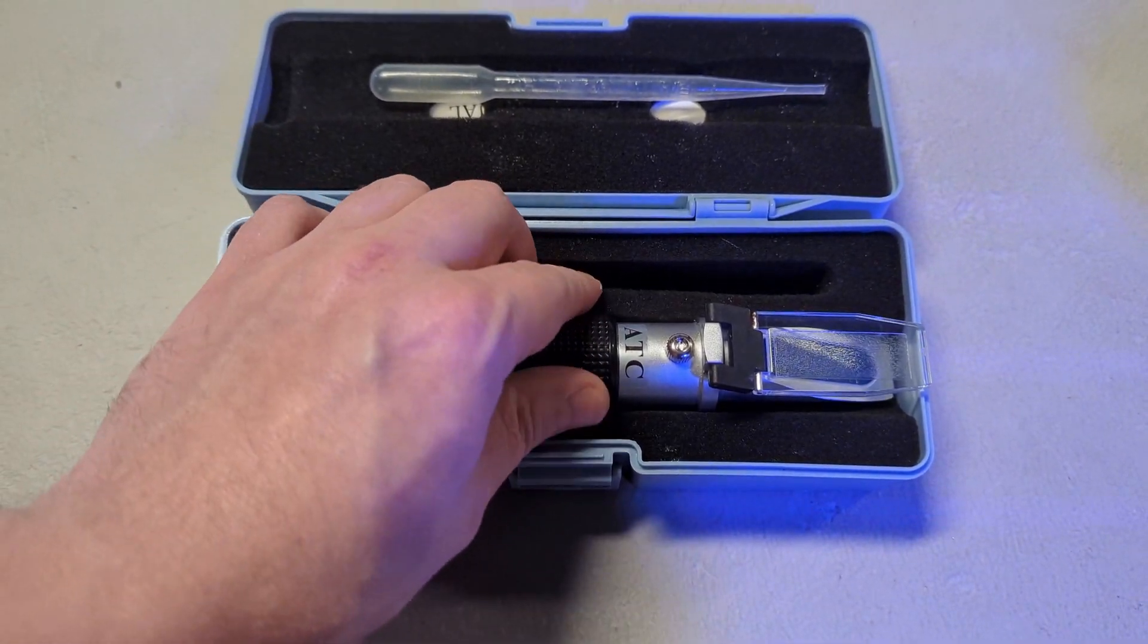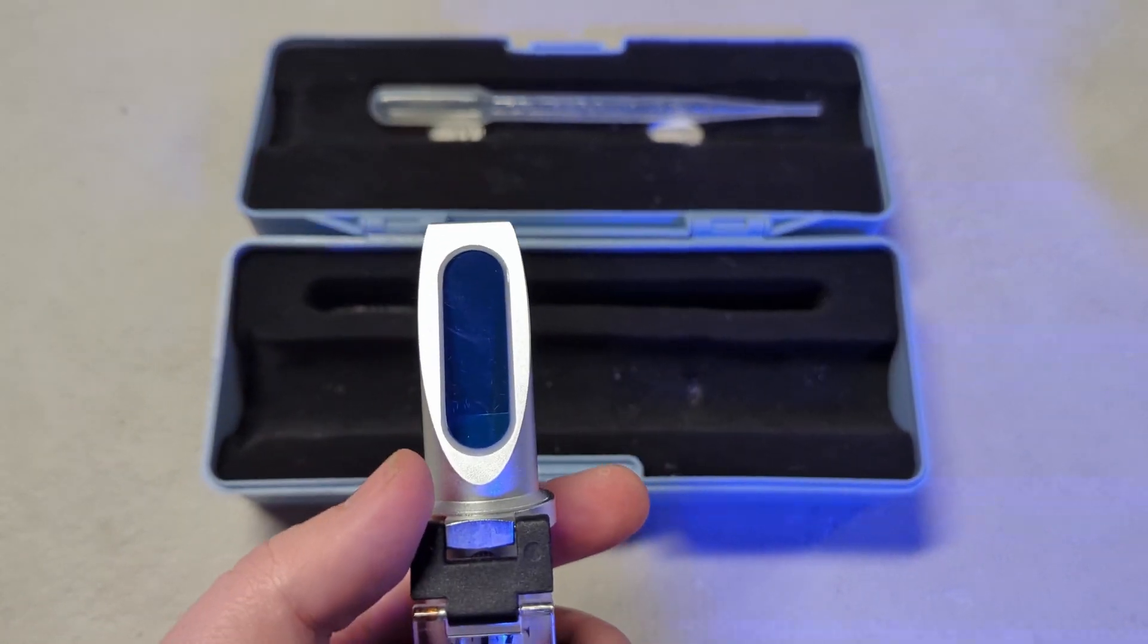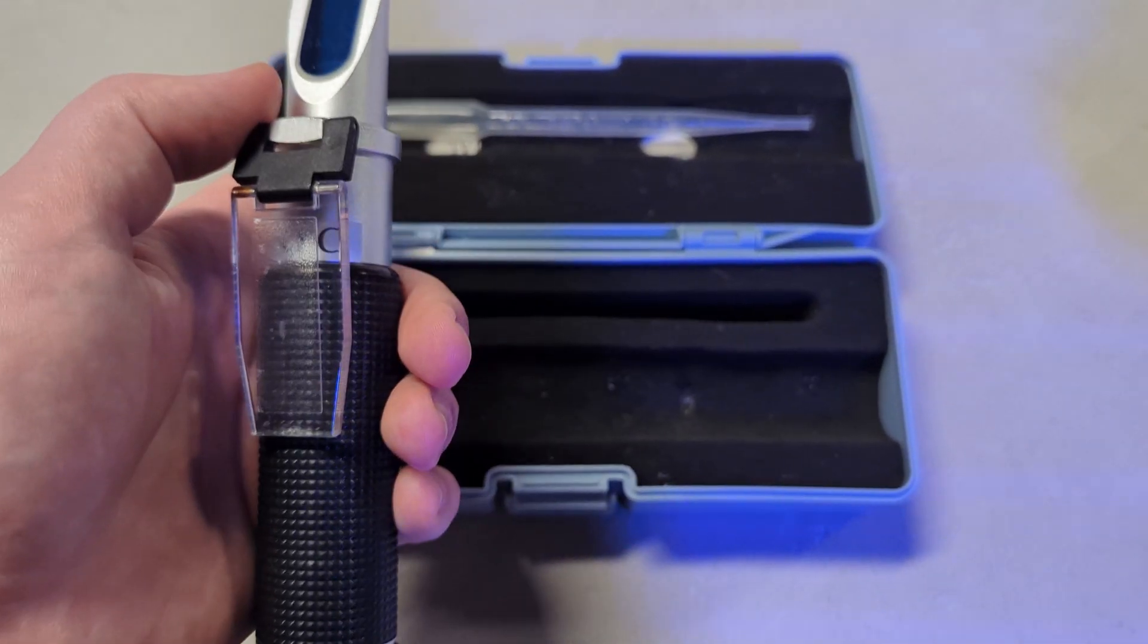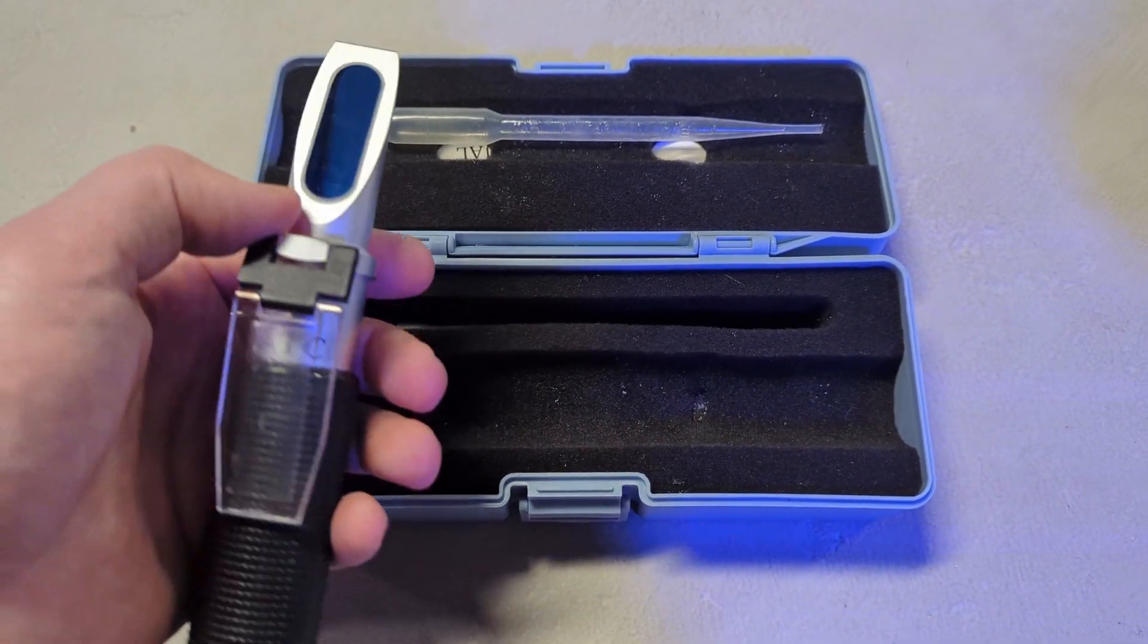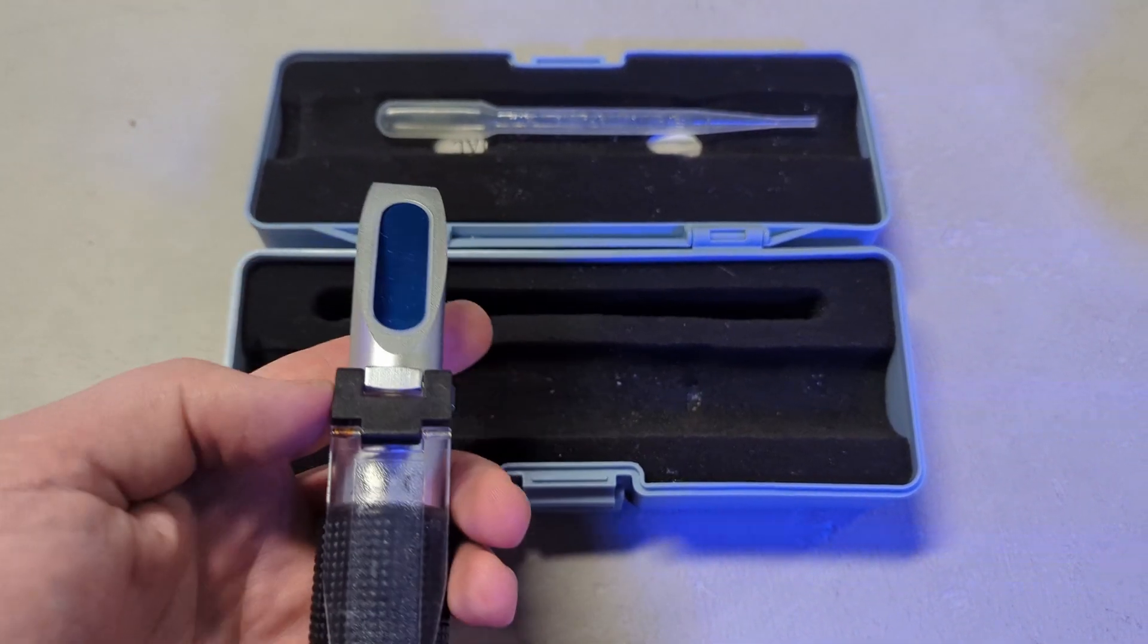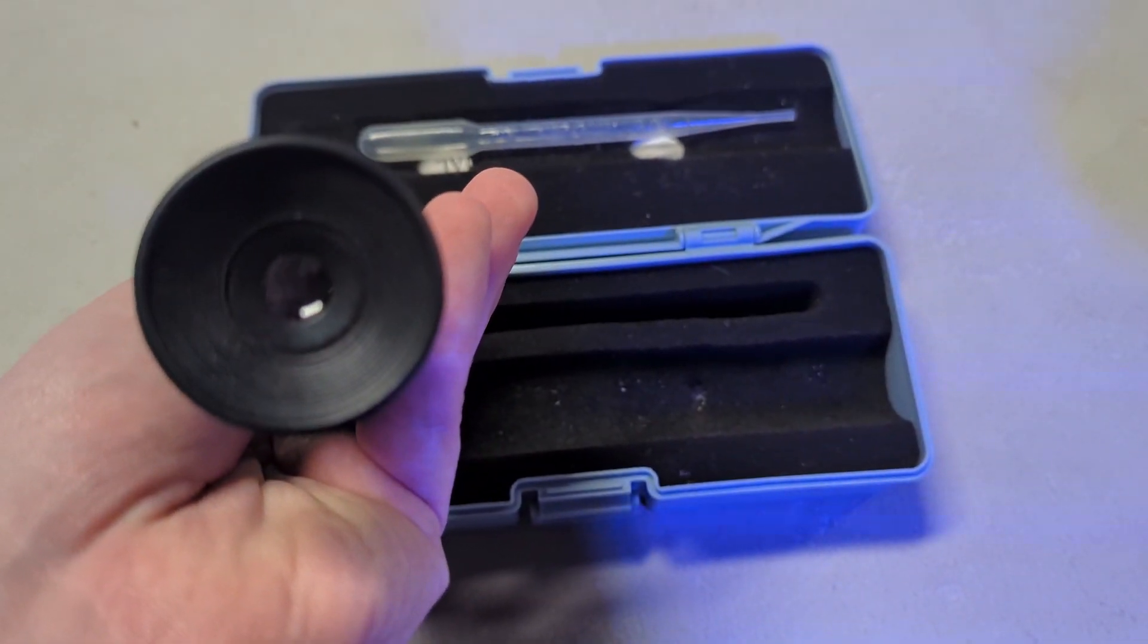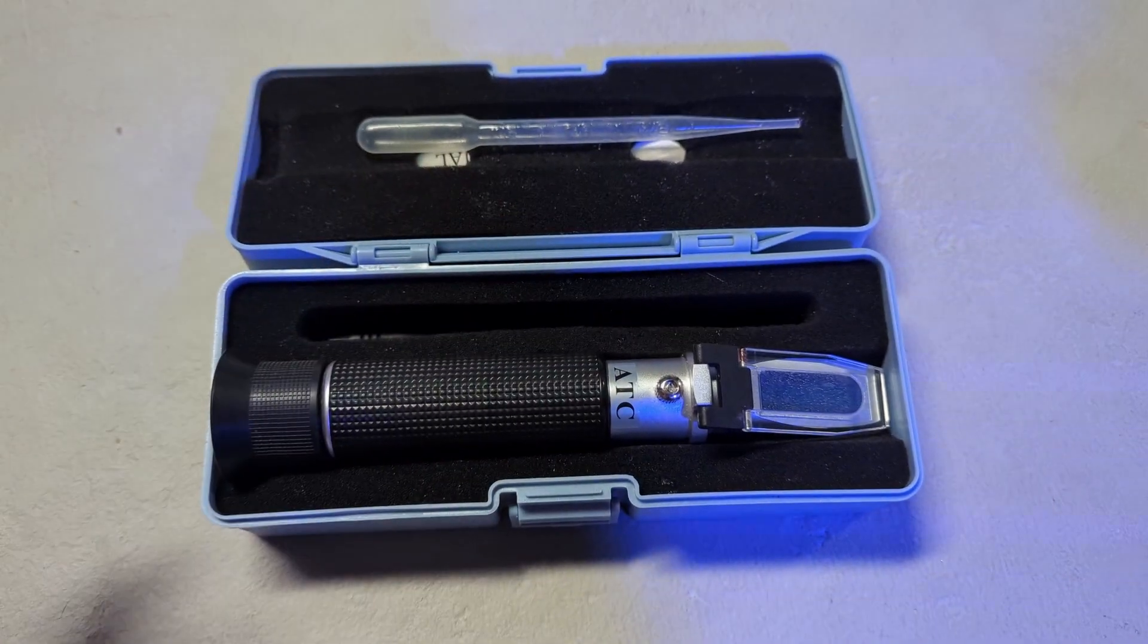I'll go into more depth on how to actually test your salinity levels in the next part of the video. Essentially, you'll open up the flap, grab the pipette that comes in the box, fill it with water, pour the water on the eyepiece, close the flap, and then look through the lens to see what the salinity level is.